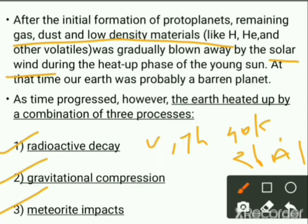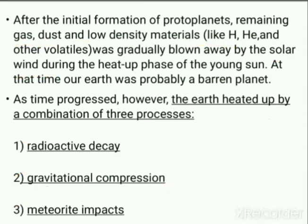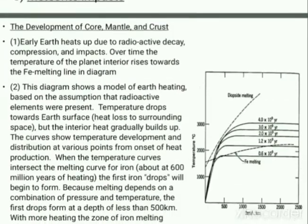The second process is gravitational compression, during which gravitational potential energy is converted to heat. The third process is meteoritic impact, which heats up the planet's surface due to shock waves and impact melts. Meteoritic impacts were high in past Earth as part of the accretional process. All three processes combined to give Earth a heat-up phase.